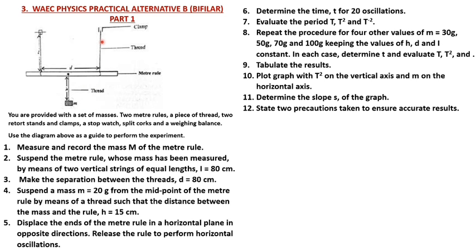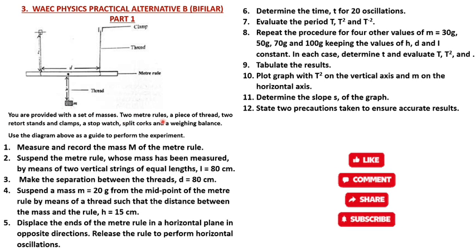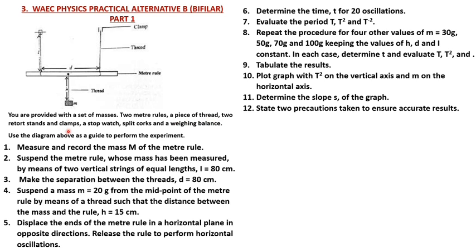Always read through the instructions — that will help you a lot. As you can see, we have a stand representing two pivots — the resource and the clamp. We have threads of the salient, a material, another thread, and a mass M. D is the distance between the two threads. You are provided with a set of masses, two meter rules, a piece of thread, two retort stands and clamps, a stopwatch, a split cork, and a weighing balance to determine the weight of the material.